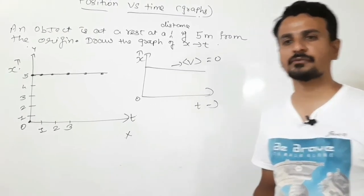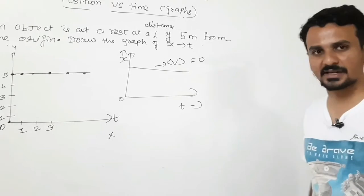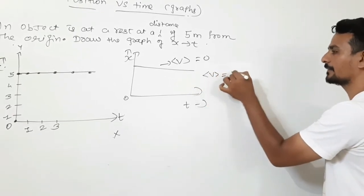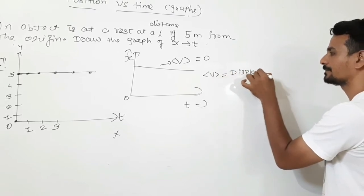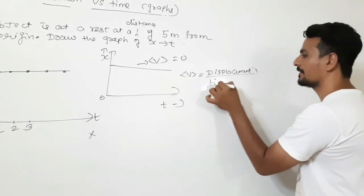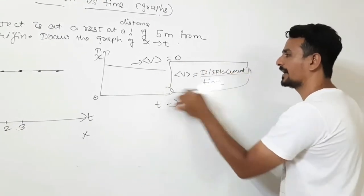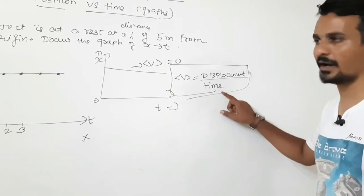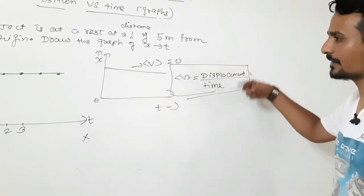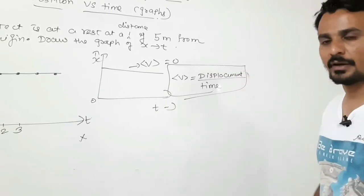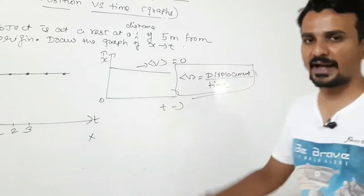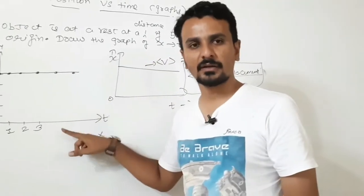Since the object is at rest, its velocity is 0. Now in the next graph we will see how to calculate average velocity from the graph itself. As we know, average velocity is displacement divided by time. We will calculate average velocity with this formula and then again calculate it with the help of the graph and check that both answers are the same. In this particular graph, average velocity is 0 as the object is not performing any motion.